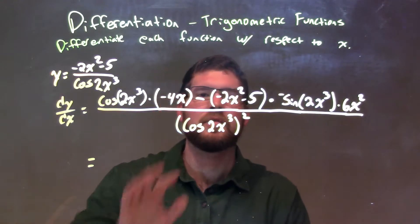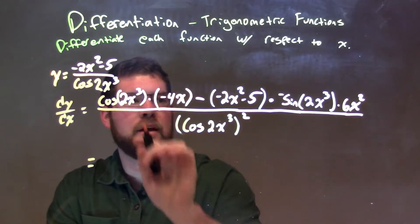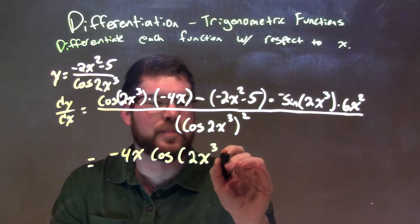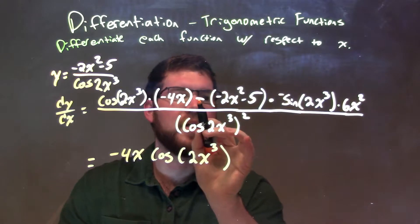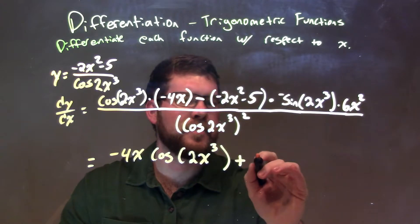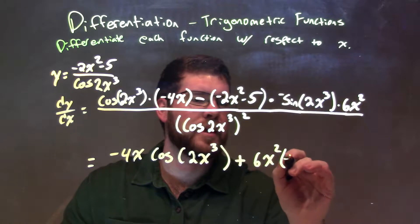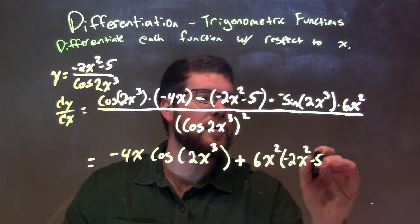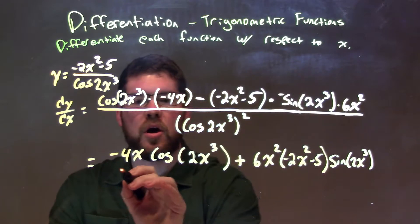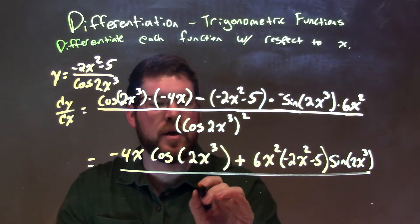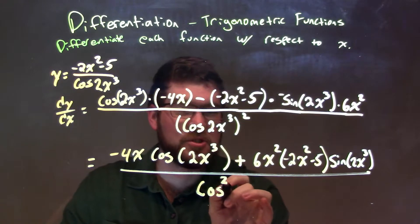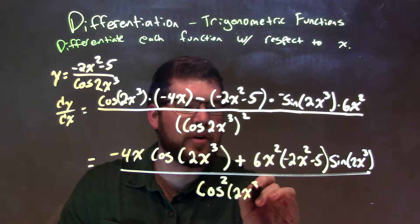I'm going to bring out the negative 4x out front on the left-hand side: negative 4x cosine of 2x to the third power. The negative from the sine and the negative there switch to a positive, and I bring the 6x squared out front, leaving negative 2x squared minus 5 times the sine of 2x to the third power. All of that is over cosine squared of 2x to the third power — that notation is clearer.